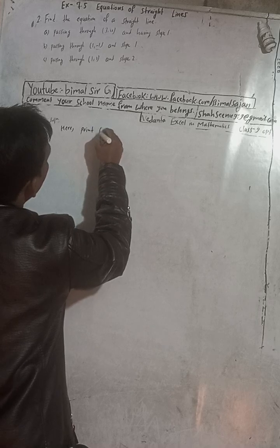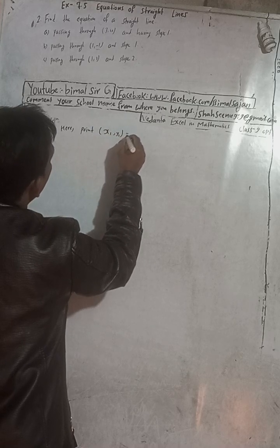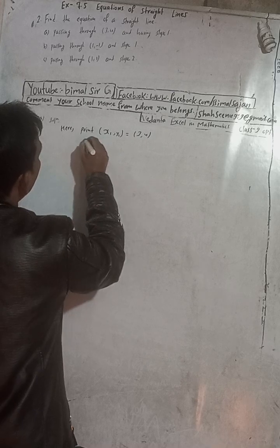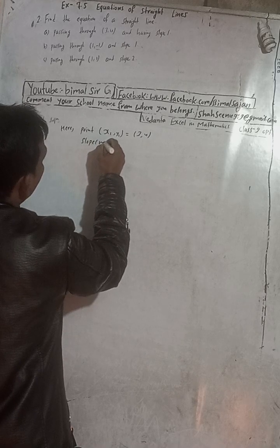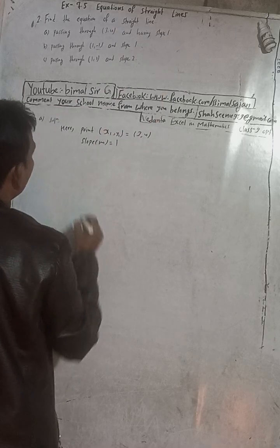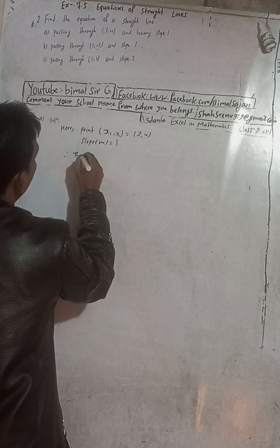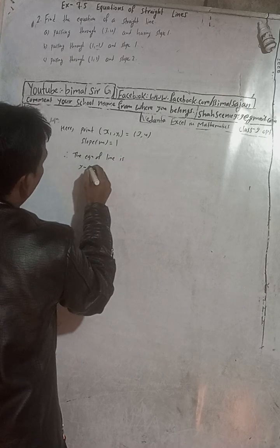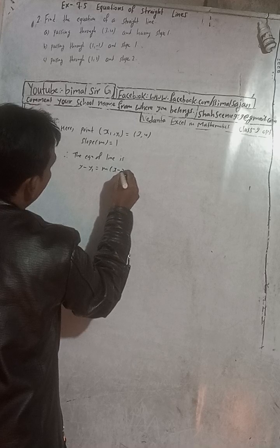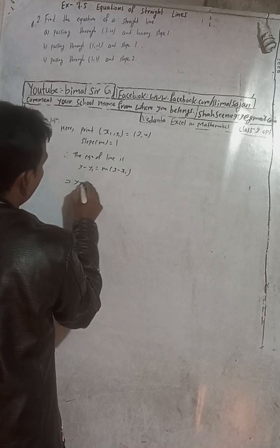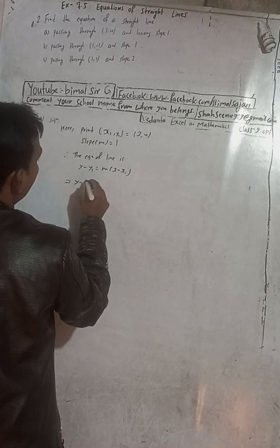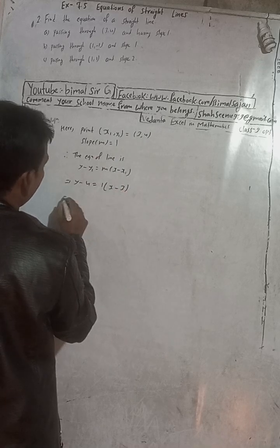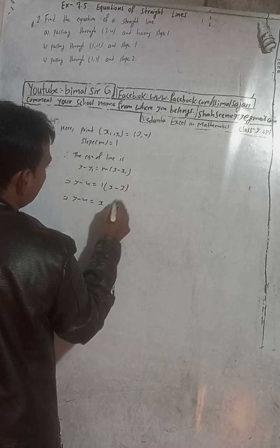Here the point (x1, y1) is (3, 4) and slope m is equal to 1. Now the equation of a line is y minus y1 is equal to m into x minus x1. Substituting: y minus y1, where y1 is 4, is equal to m which is 1 into x minus x1, where x1 is 3. So this gives y minus 4 equals 1 into x minus 3.